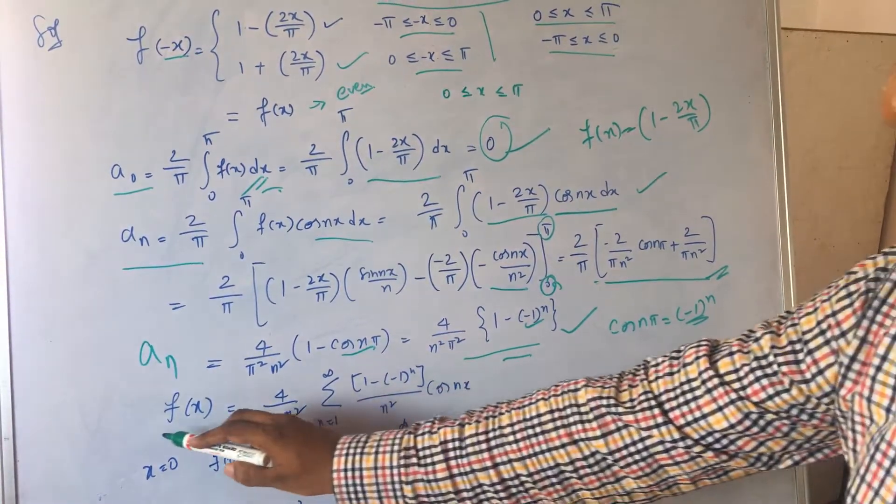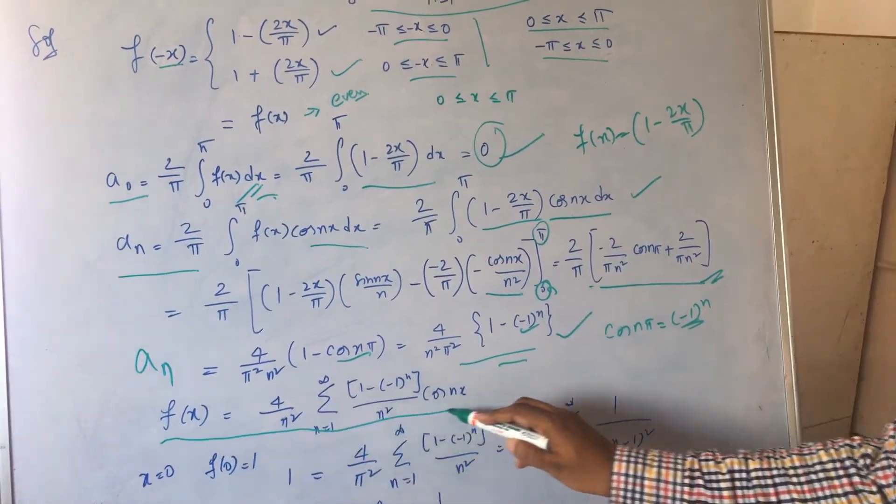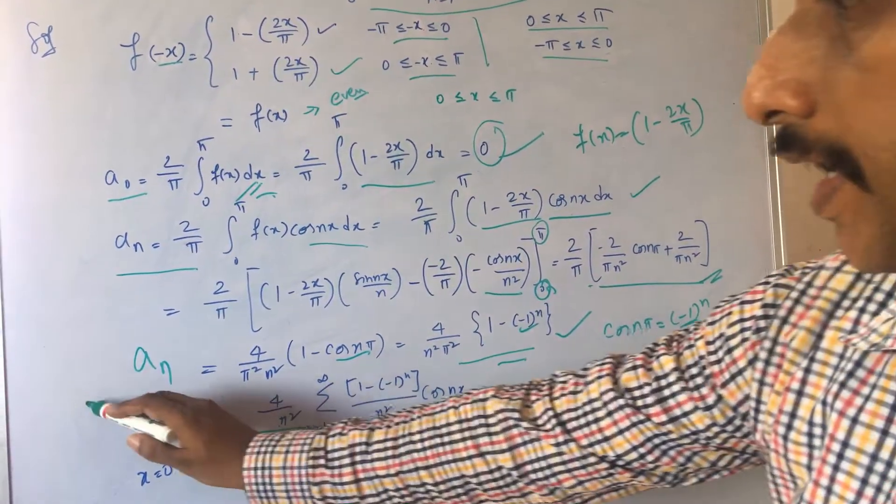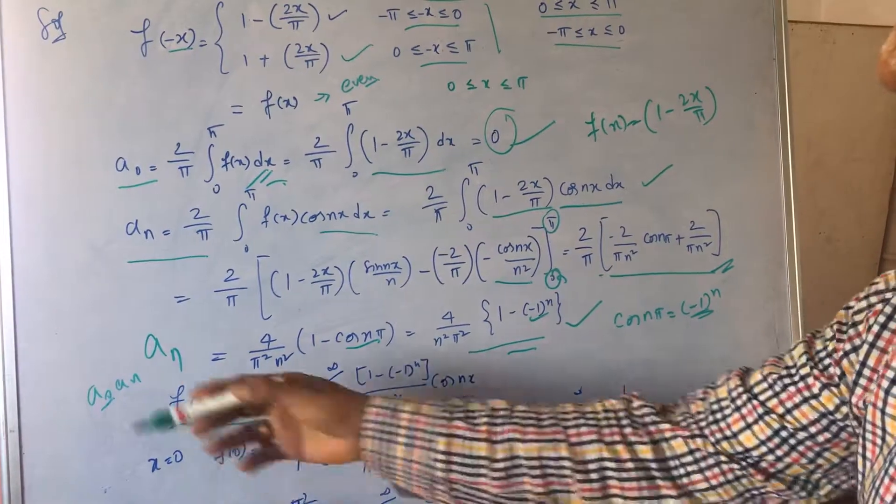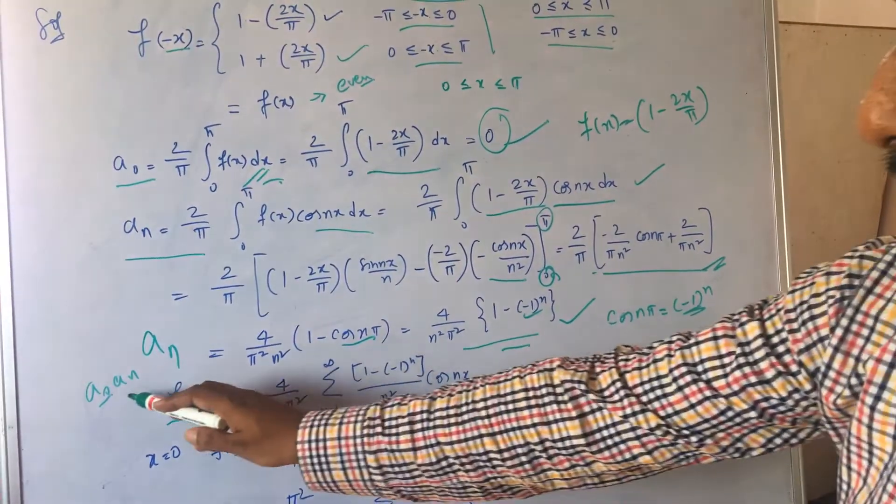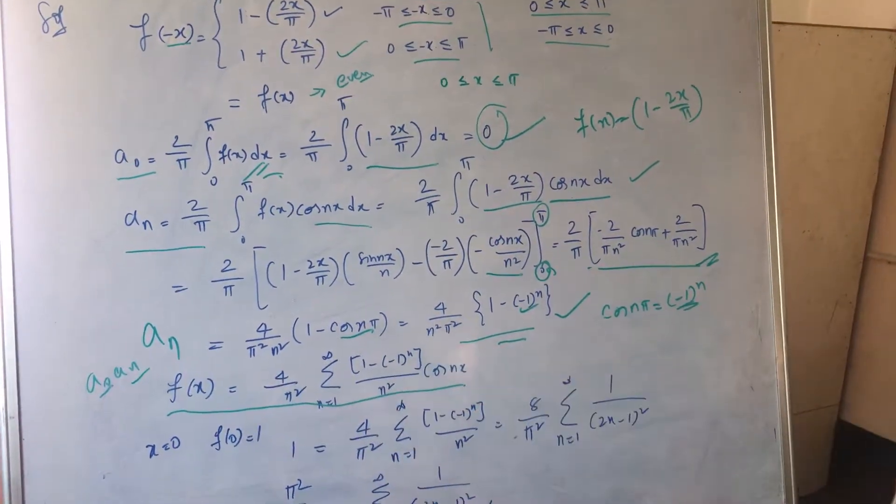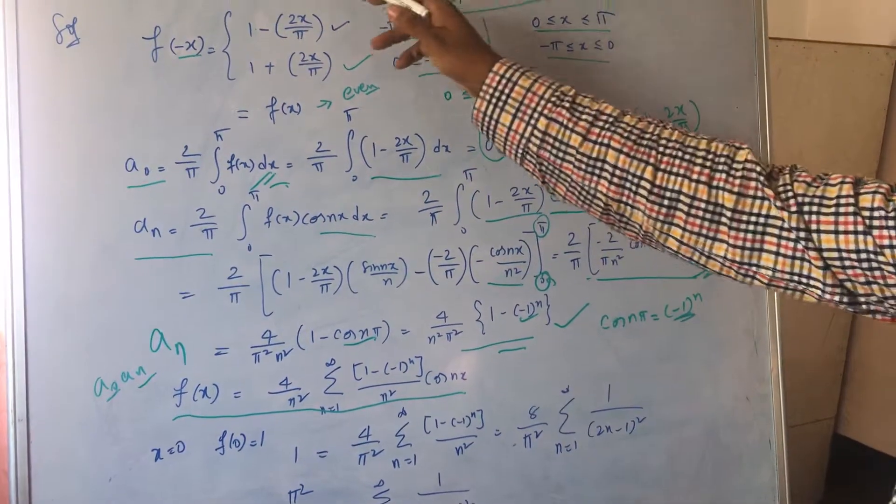Now the series expansion by substituting a naught and aₙ. A naught being 0, so I need not bother about that. The aₙ, I substitute it.